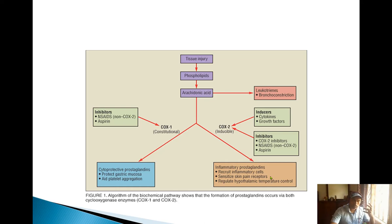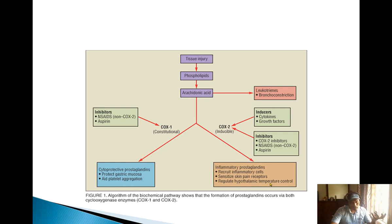Prostaglandins sensitize skin pain receptors, giving the message that something has happened to the body. They also regulate hypothalamic temperature control, increasing temperature — again a body mechanism signaling that something has occurred. Additionally, prostaglandins are cytoprotective: they protect the gastric mucosa and aid platelet aggregation, helping in clotting.